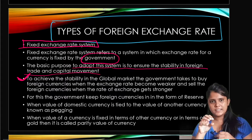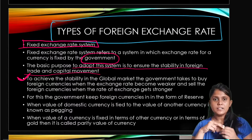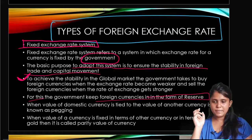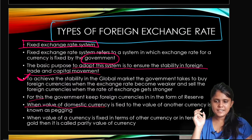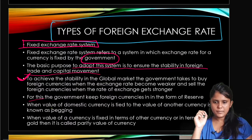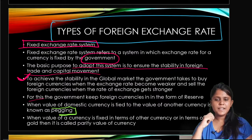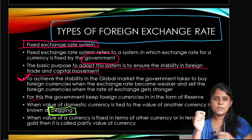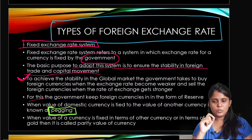When foreign currency rates are low, the government buys them. When exchange rates are high, the government sells the currencies. For this, the government keeps foreign currencies in the form of foreign reserves. When the value of the domestic currency is tied to the value of another currency, it is known as pegging. This is a very important term.